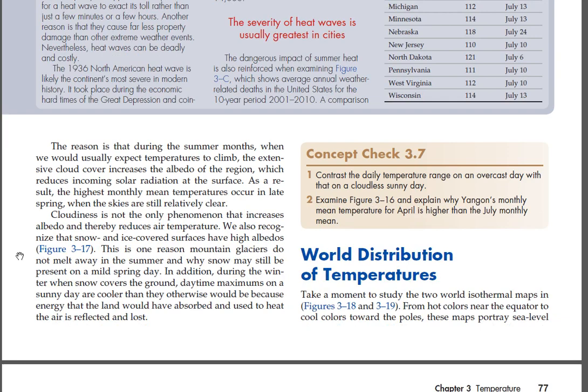Cloudiness is not the only phenomenon that increases albedo and thereby reduces air temperature. We also recognize that snow and ice-covered surfaces have high albedos (Figure 3-17). This is one reason mountain glaciers do not melt away in the summer and why snow may still be present on a mild spring day. In addition, during the winter when snow covers the ground, daytime maximums on a sunny day are cooler than they otherwise would be because energy that the land would have absorbed and used to heat the air is reflected and lost.